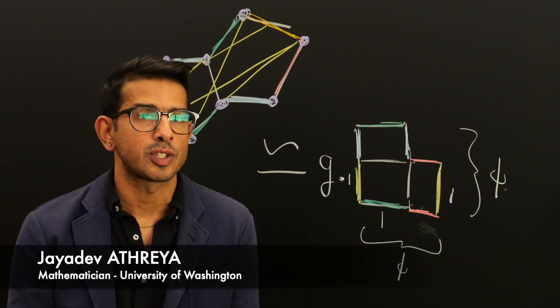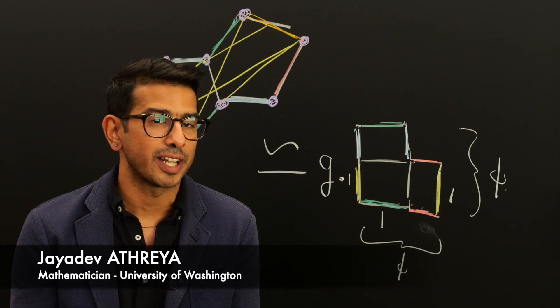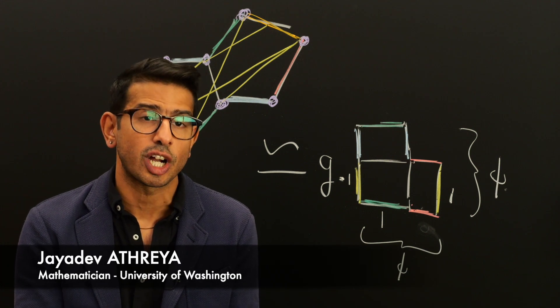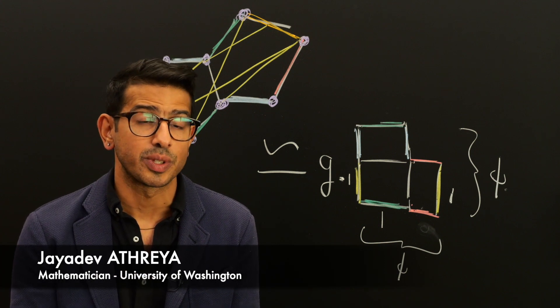There are very simple questions in Newtonian mechanics, systems called billiards, that we don't know the answers to. Even though we can describe the physics, the long-term behavior of these systems is really quite complicated.